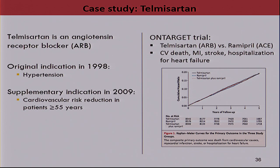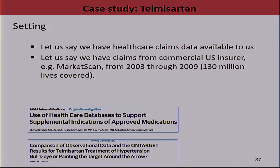A quick use case: telmisartan. This is a case study of secondary approval where telmisartan, an ARB, had an indication in 1998 for reducing hypertension based on blood pressure measurements, and they wanted a secondary indication in 2009 for cardiovascular risk reduction. They had done the ON TARGET randomized trial, comparing telmisartan against ramipril against the usual MACE endpoints. The Kaplan-Meier curves are as null as it gets, which for a non-inferiority trial is good. They received a secondary indication based on that. Our question was: if we go back in time and use the claims data available at that point in time, would we come to the same conclusion?